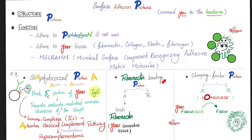We also have fibronectin binding protein, which binds to fibronectin, and clumping factor protein — also known as coagulase — which causes coagulation. That's why staph aureus causes folliculitis, abscess, furuncle, and carbuncle, but is less likely to cause cellulitis, necrotizing fasciitis, or erysipelas.